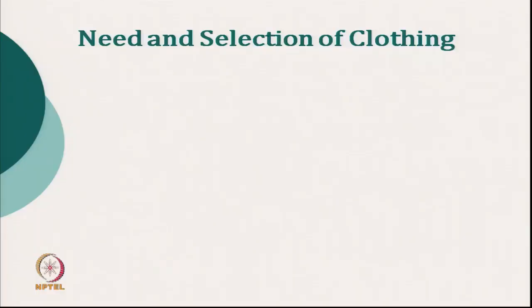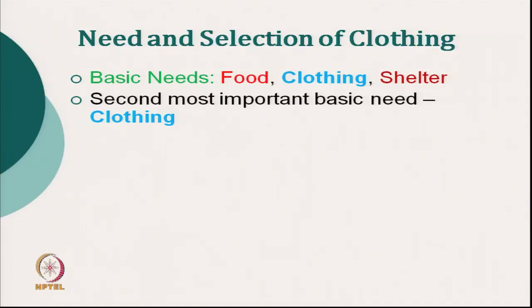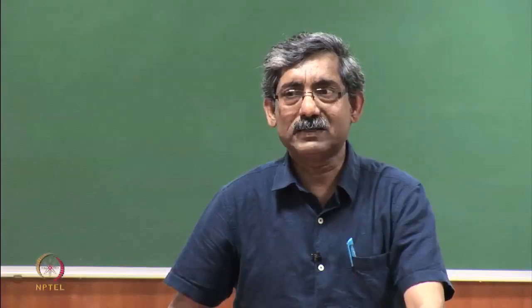Why do you need clothing? Clothing is one of the basic needs of human beings — it is the second most important basic need after food. Human expectation is much more than the basic need, depending on wealth, status, occupation, age, occasion, gender — there are many other factors which control the selection of clothing. There are 4 basic factors on which clothing selection depends. Once we understand clothing selection, we can explain comfort related to it, and our area will be limited to clothing-related comfort.